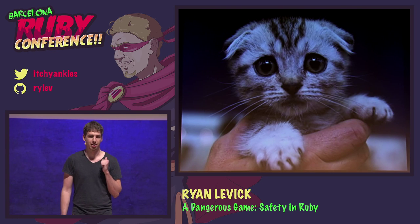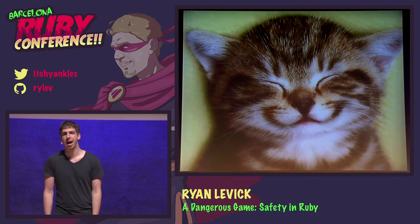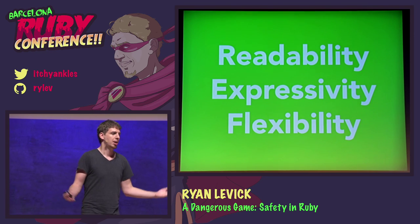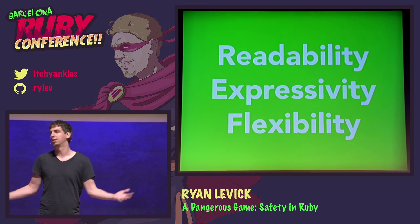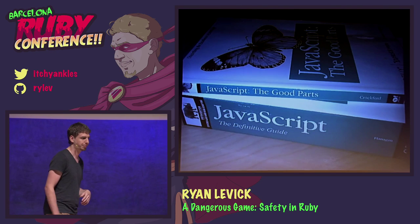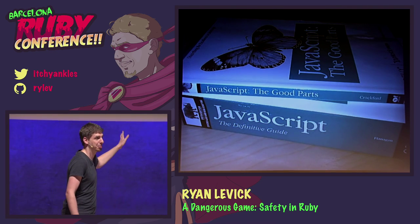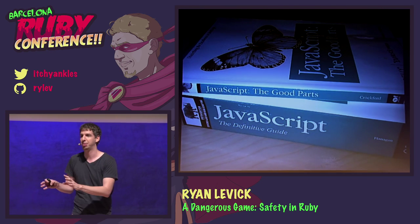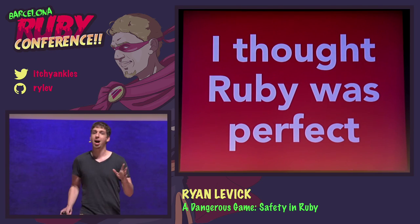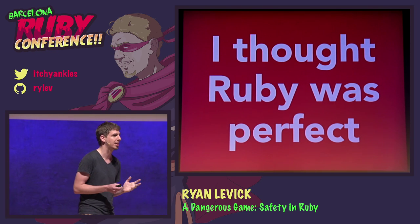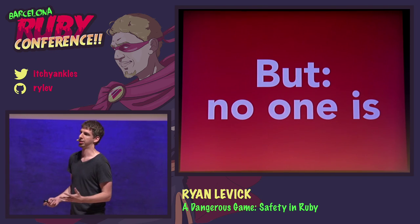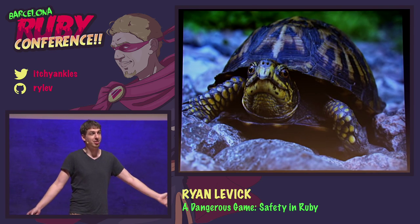Ruby has truly, truly made a difference. Why is Ruby so great? Because Ruby is readable, it's expressive, and it's flexible. Most of Ruby is the good parts. I thought Ruby was perfect when I started out — how could there be anything better? But no one is perfect, not even Ruby. For one thing, Ruby is pretty slow. Everybody knows that. We have things like Rubinius and JRuby to help with this.